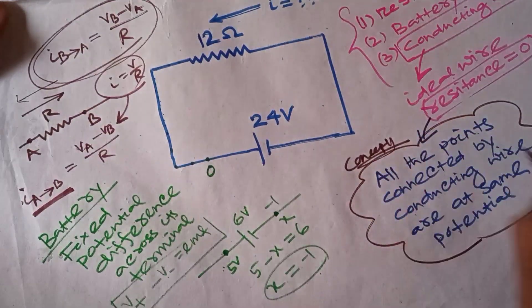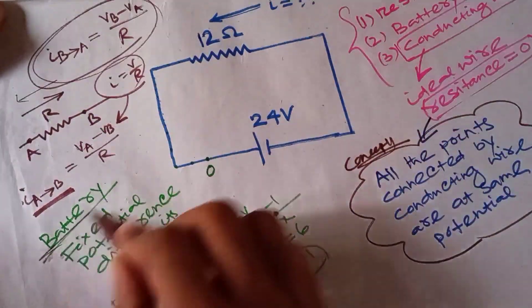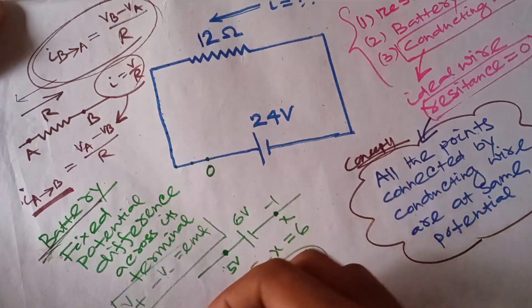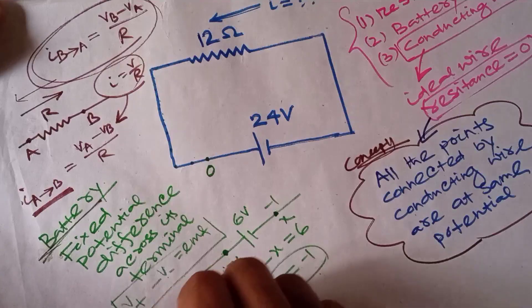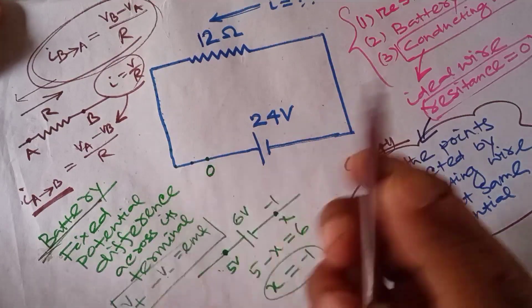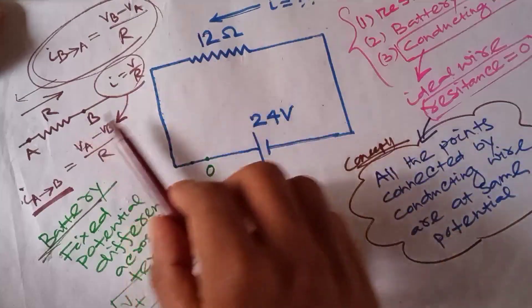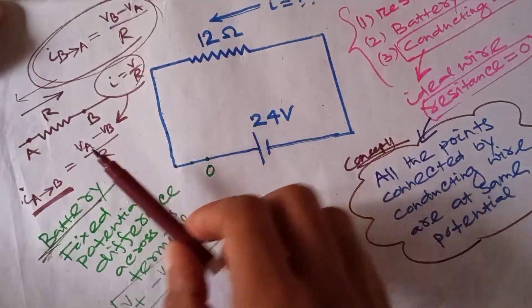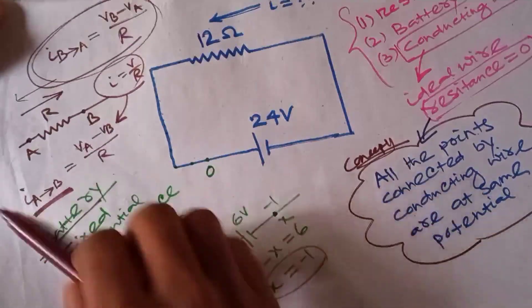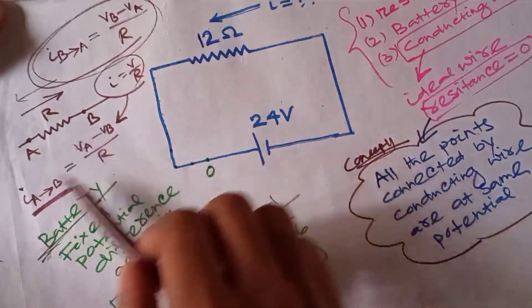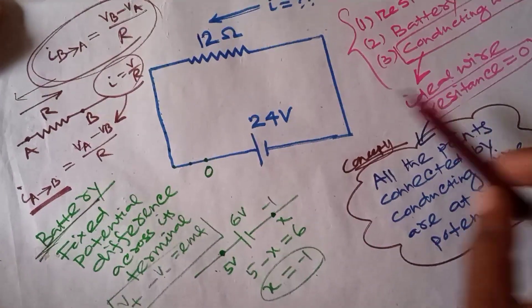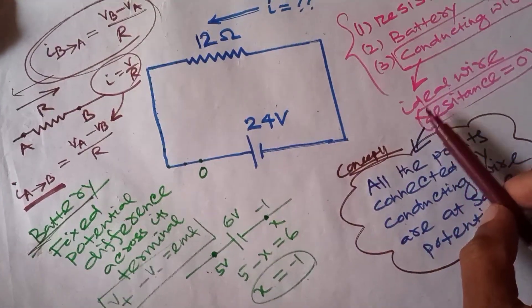So to summarize our three concepts: Concept one — all points connected by conducting wire are at the same potential. Concept two — a battery always maintains a fixed potential difference across its terminals; positive side potential minus negative side potential equals the EMF. Concept three — a resistor follows Ohm's law, and you write the equation according to which direction of current you want to find.